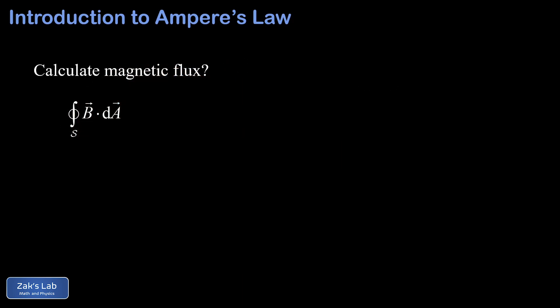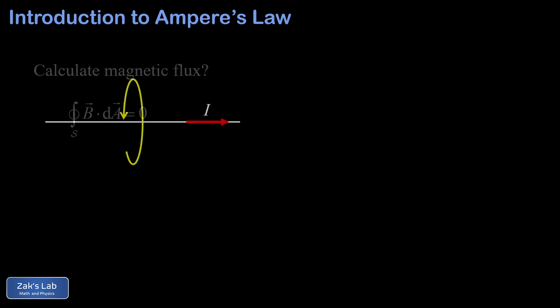It's tempting to guess that an integral for magnetic flux over a closed surface would be useful here, but the net magnetic flux through any closed surface is always zero. This is sometimes called Gauss's law for magnetism, and the main point is that the flux integral of magnetic field simply isn't useful.